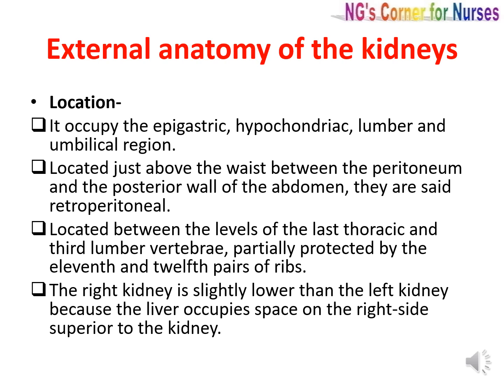Coming to the external anatomical features of the kidney — first is location. The kidneys occupy the epigastric, hypochondriac, lumbar, and umbilical regions. They are located just above the waist, between the peritoneum and the posterior wall of the abdomen, so the position is described as retroperitoneal. The kidneys are located between the levels of the last thoracic and third lumbar vertebra, partially protected by the eleventh and twelfth pairs of ribs. The right kidney is slightly lower than the left because the liver occupies space on the right side, superior to the kidney.